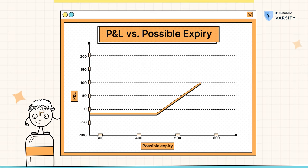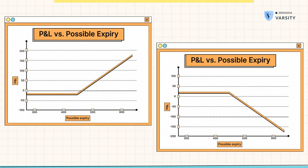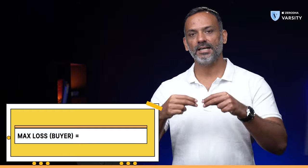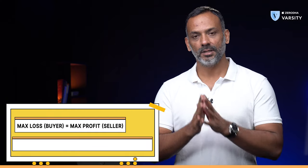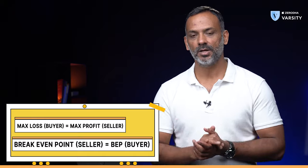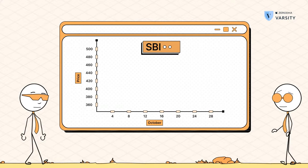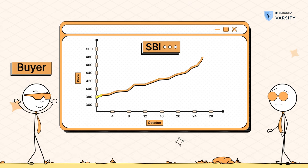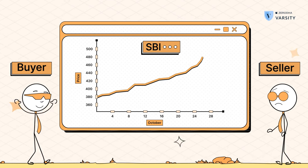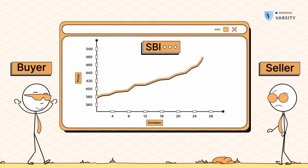When I bought the call option of SBI 460 strike by paying a premium of 17.50, there was a seller on the other side of the market. To develop the P&L profile of the option seller, all you need to do is invert this graph. The inverted graph tells us that the maximum profit potential for the seller is 17.50 — which was the maximum loss for the buyer, and now becomes the maximum profit for the seller. The breakeven points for both buyer and seller remain the same. But here's the crucial bit: as and when the stock price goes up, the buyer makes money while the seller starts losing money. Therefore, the call option seller's payoff is a mirror image of the call option buyer's payoff.